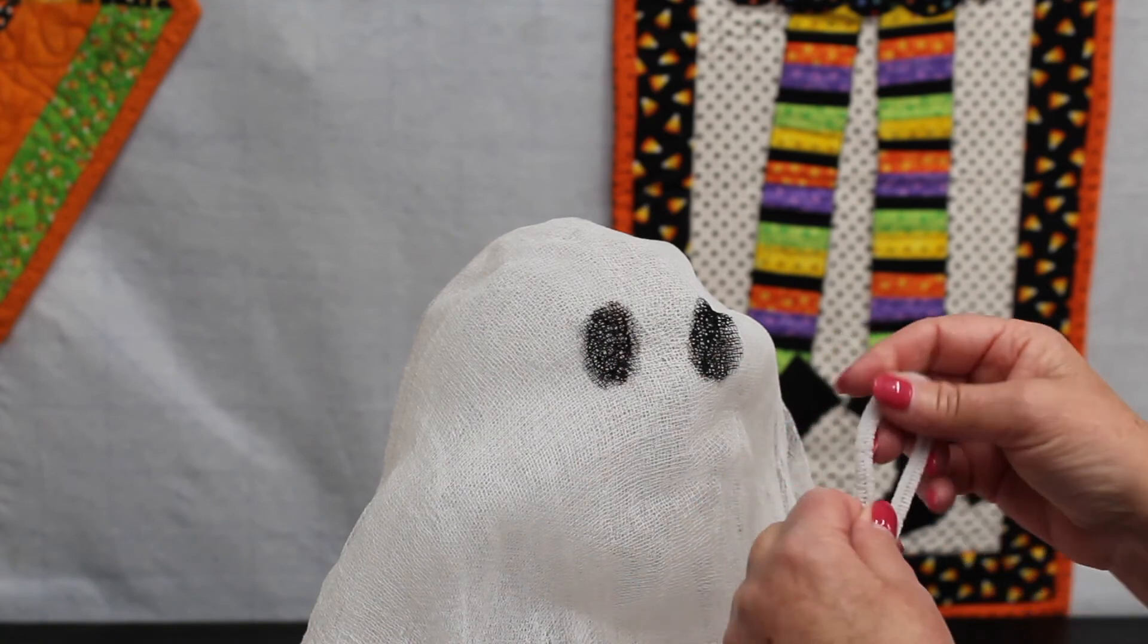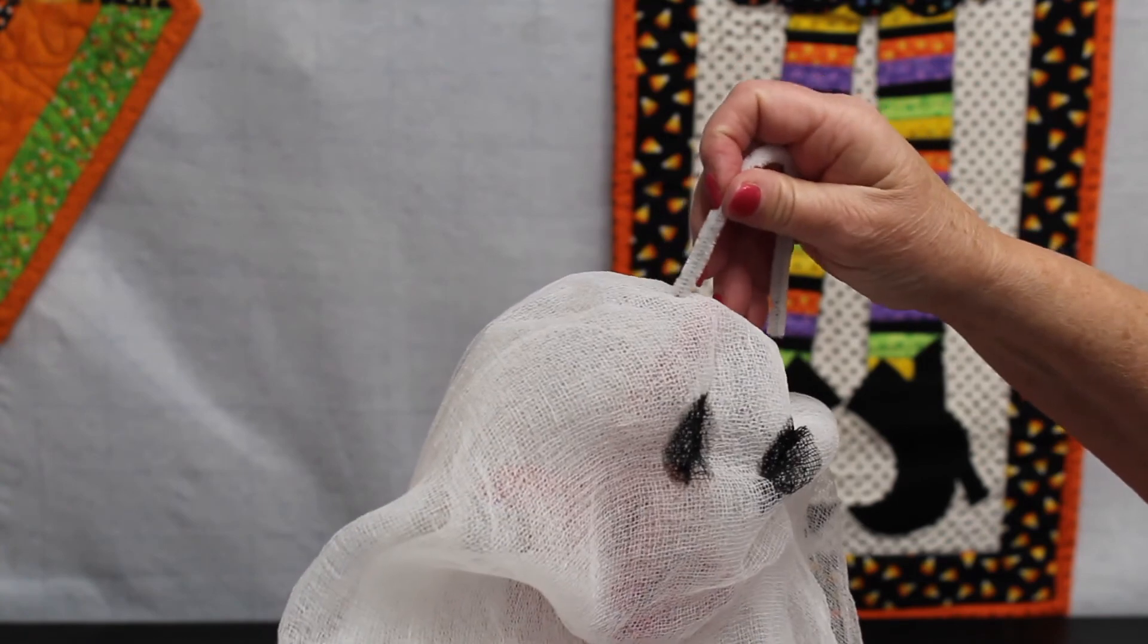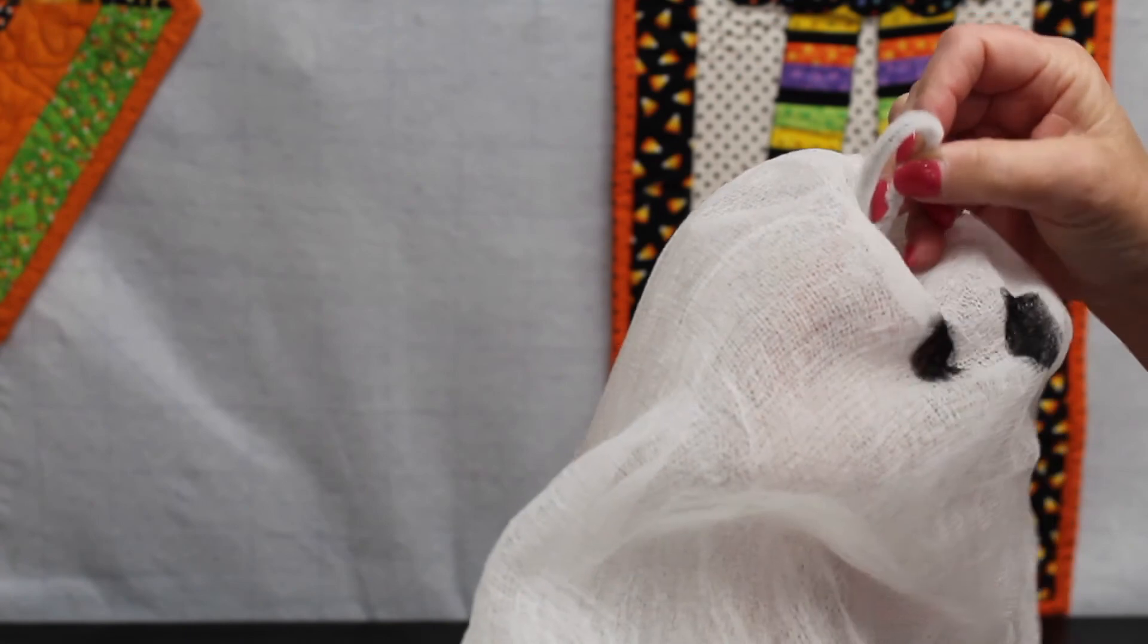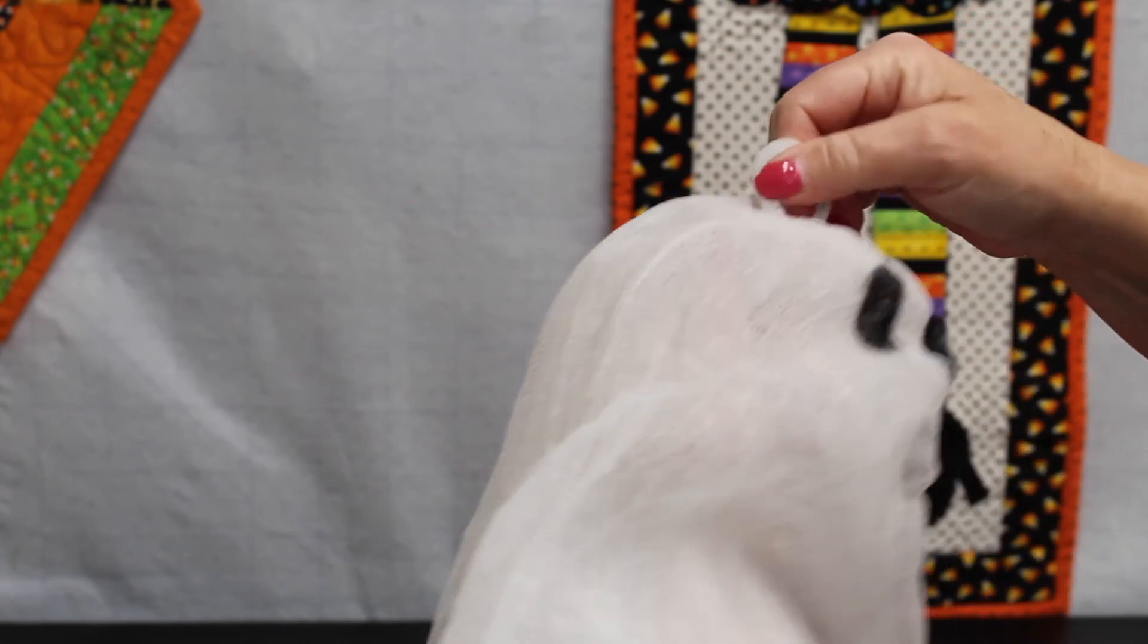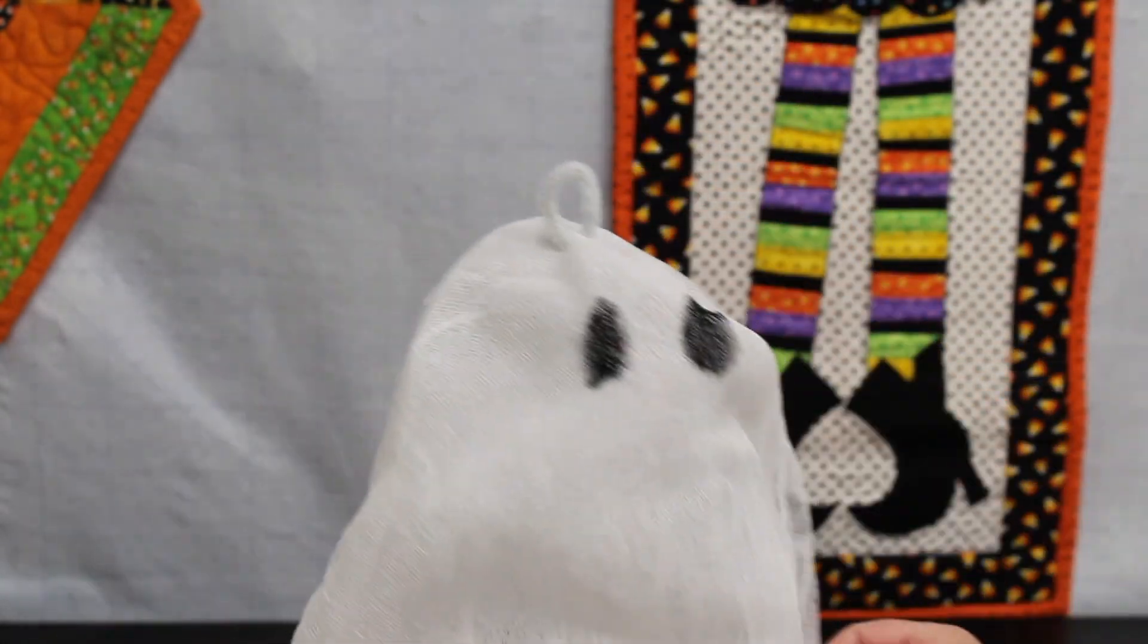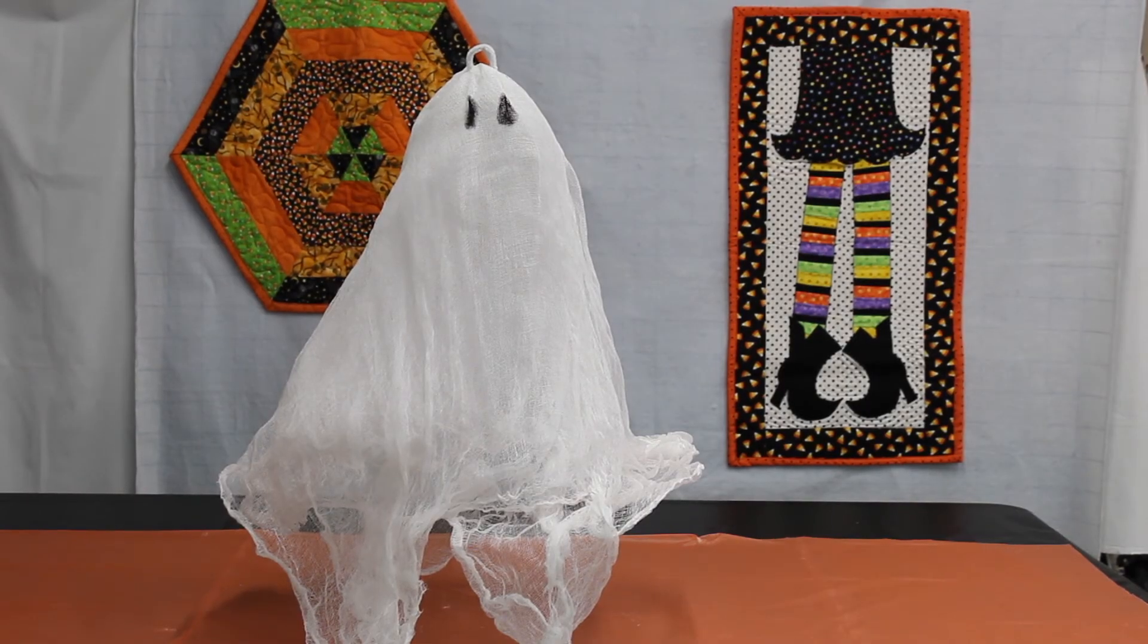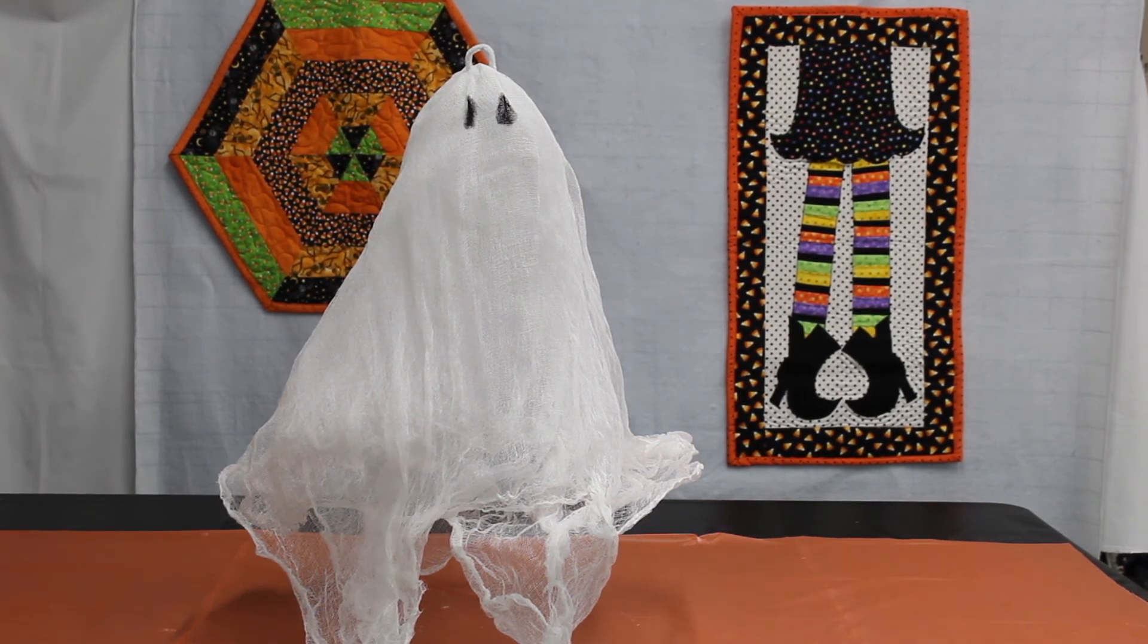I'm going to make a loop with a chenille stem. This is about six inches long and I'm going to put it on top of the ghost and thread it through both sides and twist it at the bottom so that I have some kind of a loop to hold my ribbon or my string when I want to hang it. This airy scary ghost should be used as an indoor decoration unless you live where it doesn't rain very much, otherwise it will just melt.